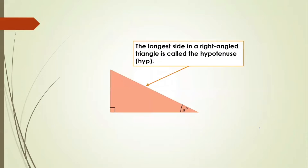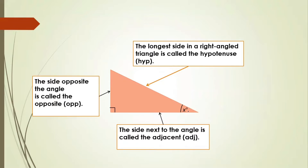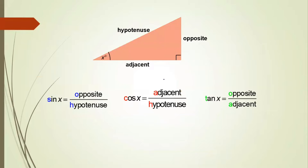Let us understand the basics of trigonometry. In a right triangle with acute angle x, the longest side opposite to 90 degrees is called the hypotenuse. The side adjacent to angle x is called the adjacent side, and the side opposite to angle x is called the opposite side. We are going to use these terms: opposite, hypotenuse, and adjacent.